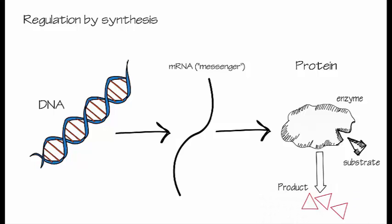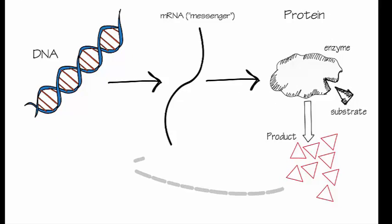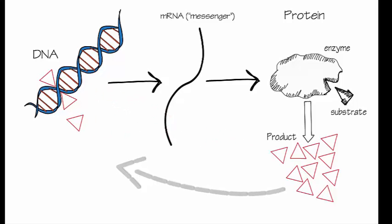In this animation, you see the enzyme metabolizing its substrate and a product being made. Sometimes the product can accumulate in excess, and when that happens, the molecules of product themselves can bind to the DNA and block the mechanism by which RNA is made.